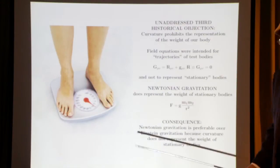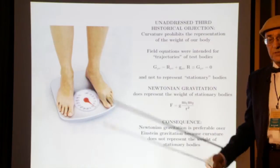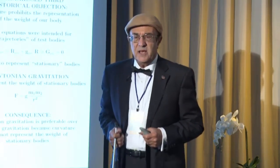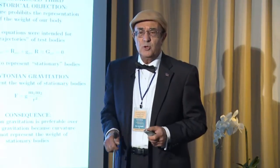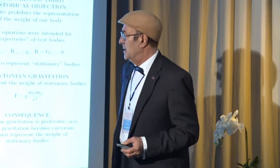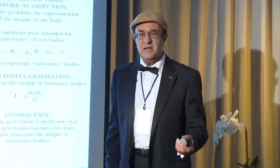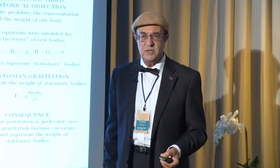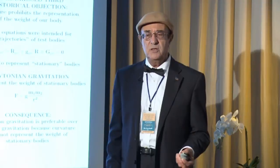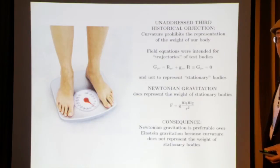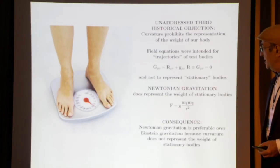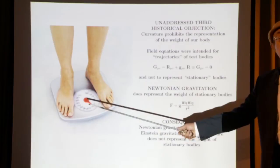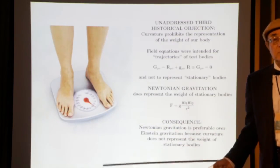The third historical objection: I have a weight. I'm attracted by the Earth and I feel this weight without moving. The historical objection is that Einstein's gravitation cannot represent the weight of stationary bodies, while Newtonian gravitation can. I have meditated on this for decades and I have to agree with the historical objection. I found no possibility to represent this fundamental gravitational phenomenon with Einstein's gravitation.